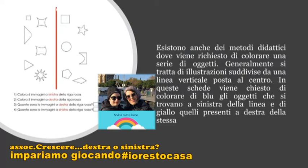Un altro metodo è quello di disegnare su un foglio alcuni oggetti dividendoli da una riga. Esistono anche dei metodi didattici dove è richiesto di colorare una serie di oggetti. Generalmente si tratta di illustrazioni suddivise da una riga verticale posta al centro. In queste schede viene chiesto di colorare di blu gli oggetti che si trovano a sinistra e di giallo gli oggetti che si trovano a destra.